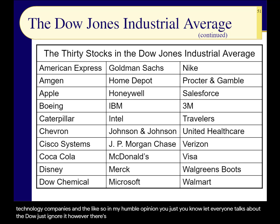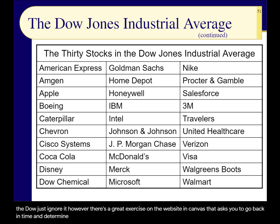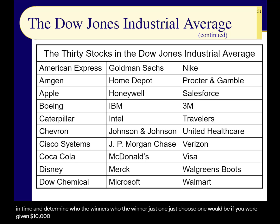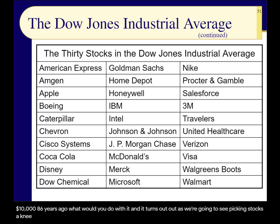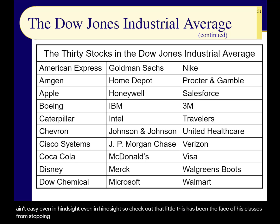However, there's a great exercise on Canvas that asks you to go back in time and determine, if you were given $10,000 86 years ago, which one Dow company would you pick? It turns out that picking stocks isn't easy, even in hindsight. In the face-to-face classes we stop and do this exercise.